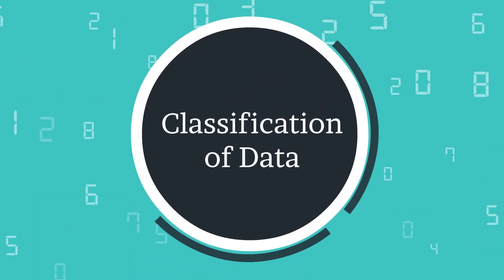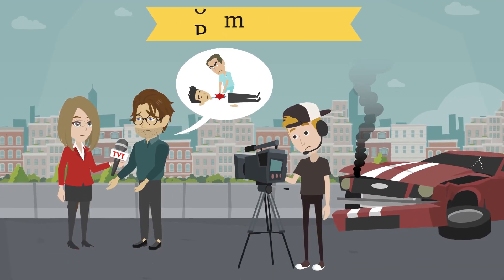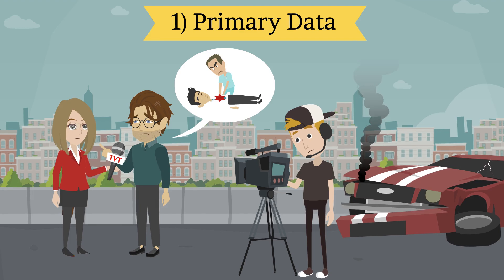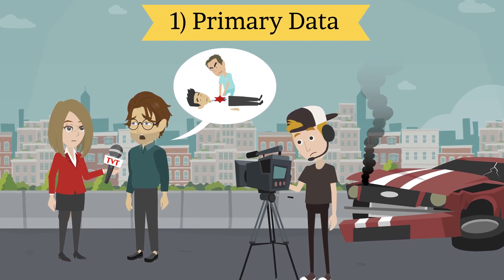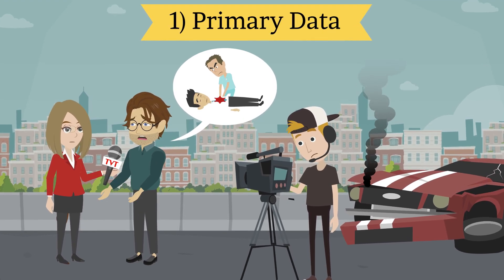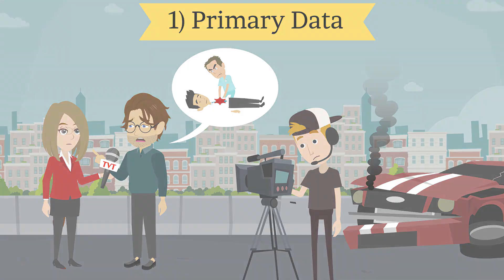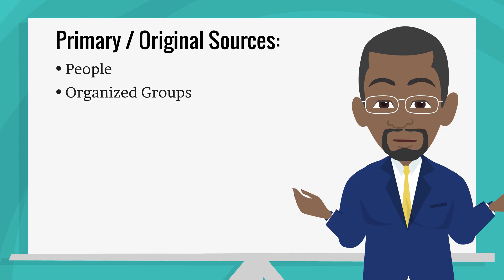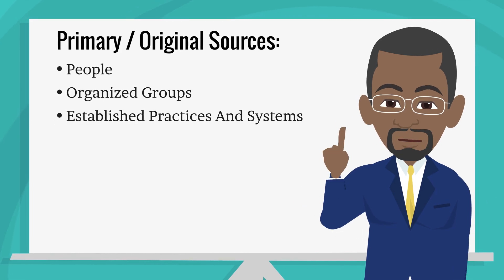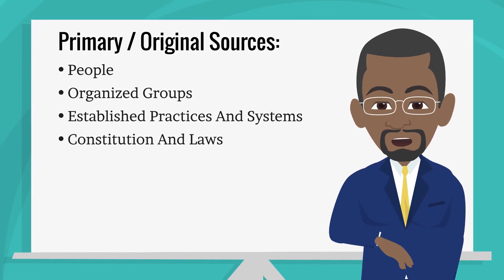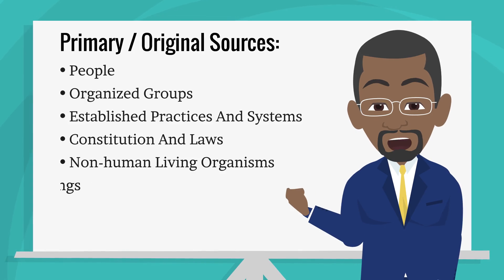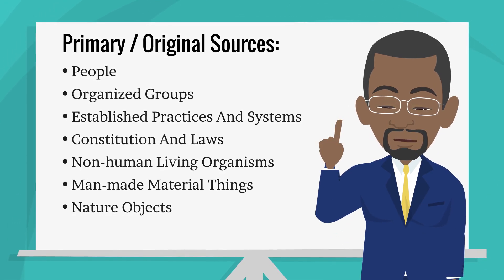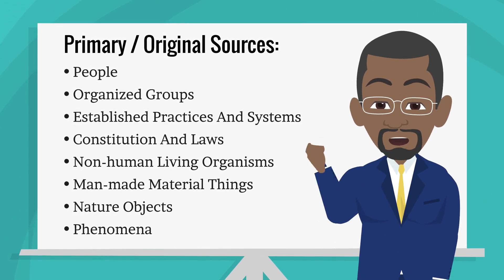Classification of Data. Primary Data: Primary data is gathered from the primary or original source and first-hand experience. These include people, organized groups, established practices and systems, constitution and laws, non-human living organisms, man-made material things, nature objects, and phenomena.